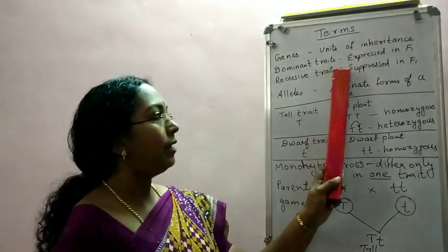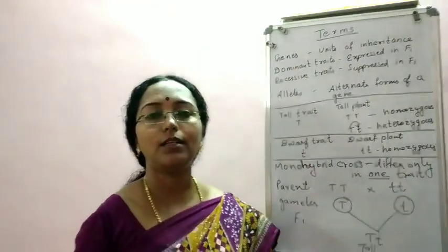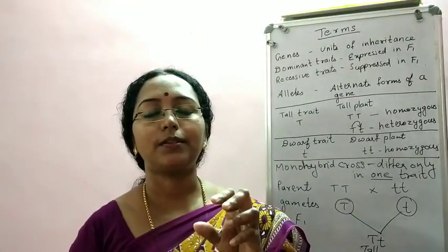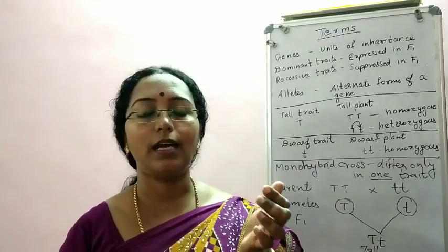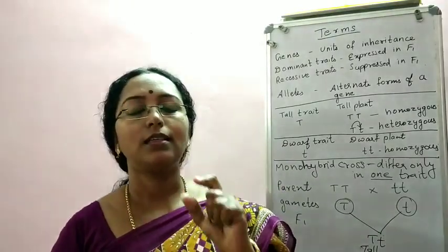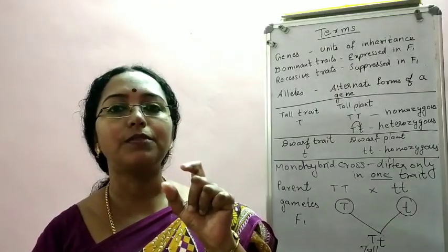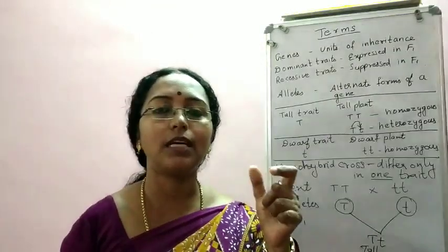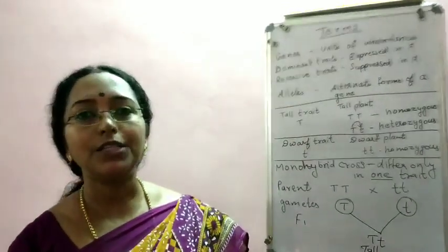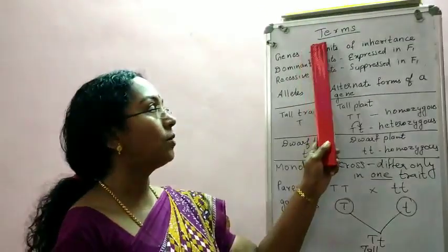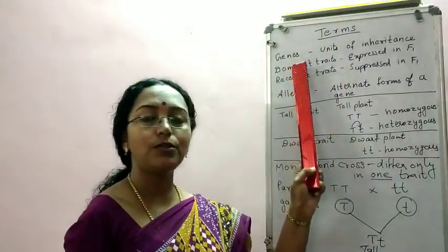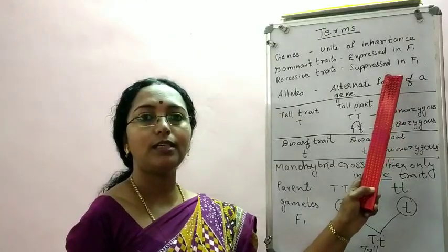In the last session I told you that in the F1 generation, some characters are expressed and some others are suppressed. Let us give some terms for those characters which are expressed and for those which are suppressed. So here in this session, we will be focusing on the terms used in genetics. The first term I've already introduced to you: genes — units of inheritance.